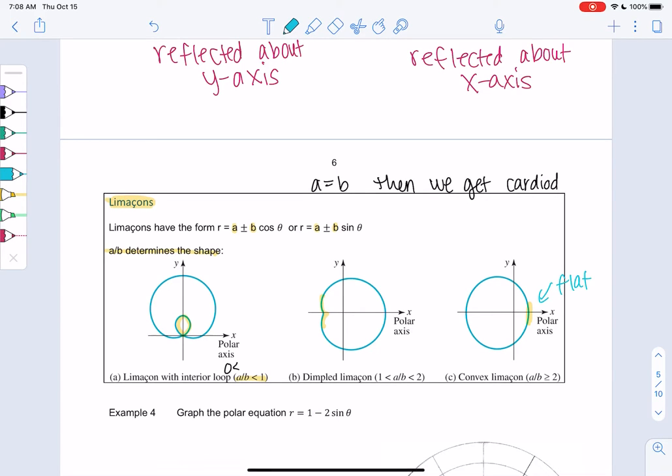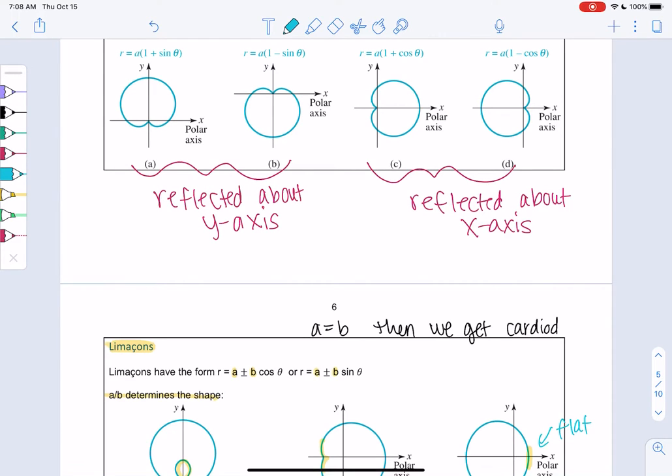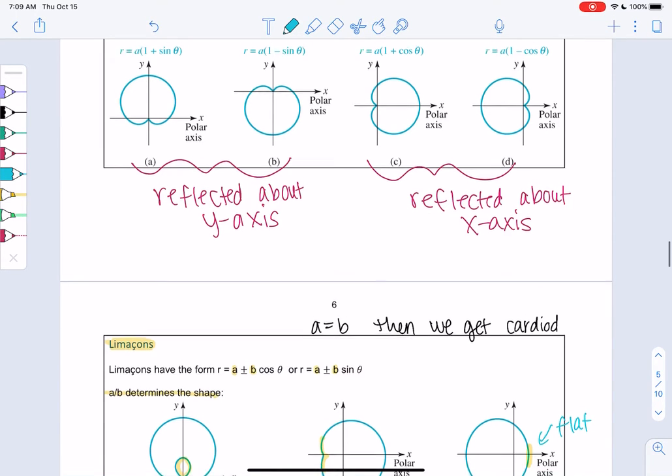And then again, all of these can be reflected in any of the directions. So just like the cardioids, it could go all four directions. And so we have to plot a couple points to kind of get an idea of the direction. So rather than trying to memorize all the different cases, we can just plot a couple points and it will take care of that for us.